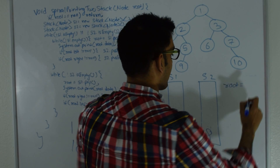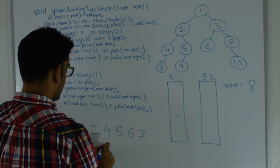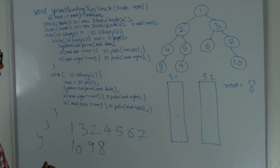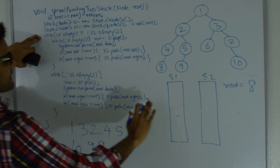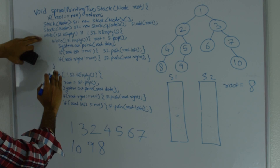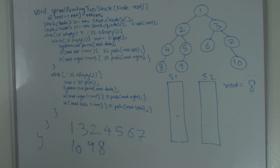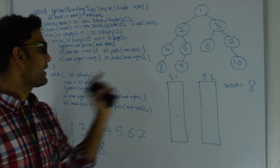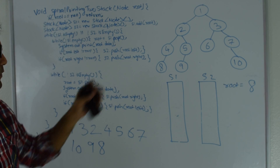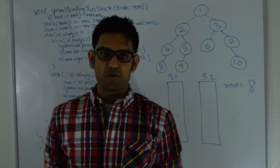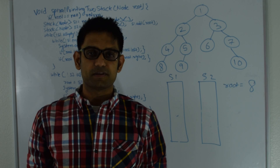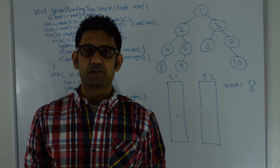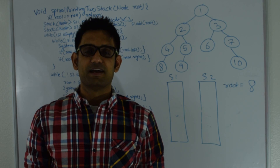We return to the outer while loop — both stack 1 and stack 2 are empty, so we don't enter it and return from the function. This function printed 1, 3, 2, 4, 5, 6, 7, 10, 9, and 8 — the spiral order for this binary tree. If you want the full code for this and the other two deque-based techniques, go to github.com/mission-peace/interview. Thanks for watching.